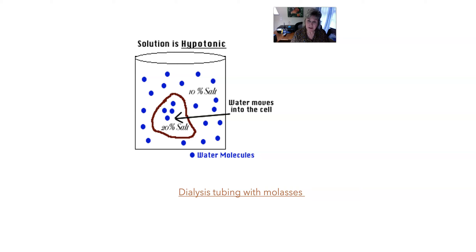There's a little video here where the experimenter is putting molasses into dialysis tubing so you can see what's supposed to happen. Molasses has lots and lots of sugar molecules, which means very few water molecules. So if you have lots of water outside the tubing and molasses inside, water should move into the tubing. Take a look at the video and see if that is the case.